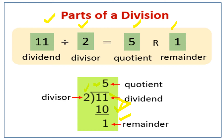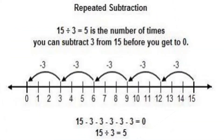We can check our answer by ourselves. You have to multiply the divisor and the quotient. Take that answer and add the remainder — you will get the dividend. Once you complete the division problem, you can check the answer this way. It is very important that everyone should know their multiplication tables.